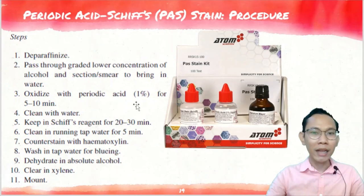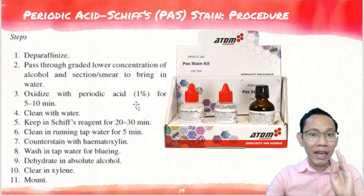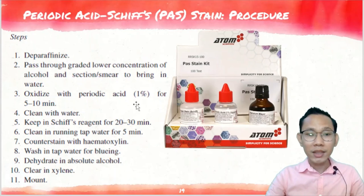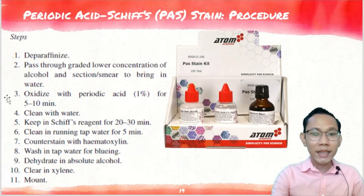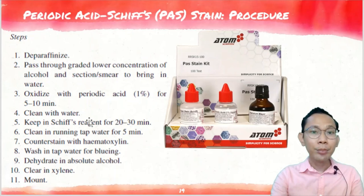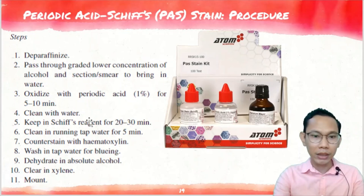As you can see, this follows the same principle for staining paraffin sections: deparaffinization, sections to alcohol, sections to water, staining, then dehydration, clearing, and mounting. The same principle applies here — we are just adding the specific staining reagents for PAS: periodic acid, Schiff's reagent, and hematoxylin. You don't have to memorize separately because you already know the overall staining principle, and you just apply the specific staining procedure.